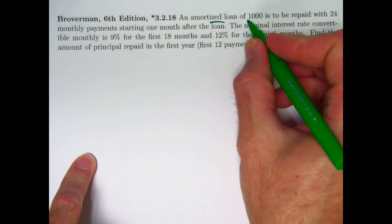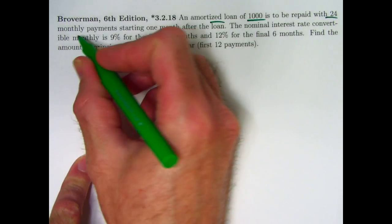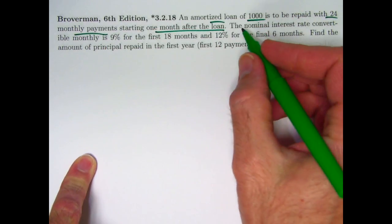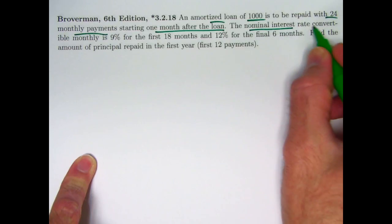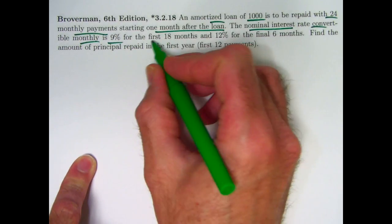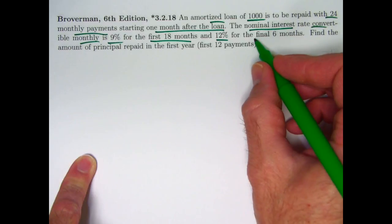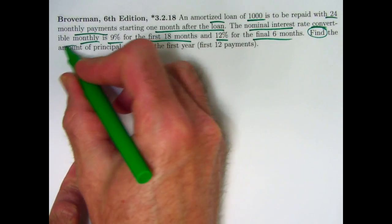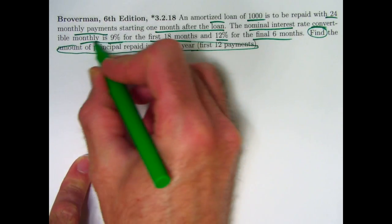An amortized loan of $1,000 is to be repaid with 24 monthly payments starting one month after the loan, so the payments form an annuity immediate. The nominal interest rate convertible monthly is 9% for the first 18 months and 12% for the final six months. Find the amount of principal repaid in the first year, the first 12 payments.